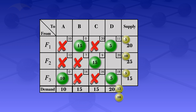We now have only one cell remaining without an allocation. For that cell, the row has 10 units left and the demand constraint also has 10 left. The minimum of 10 and 10 is 10, so we allocate 10 units there. All cells have now either been allocated or crossed out, so we are done with all allocations.